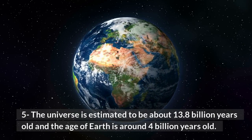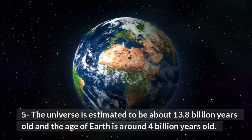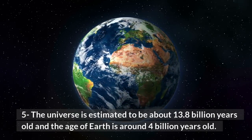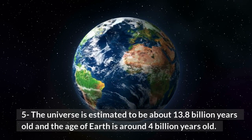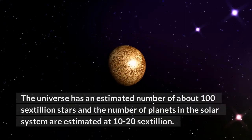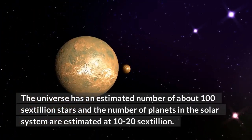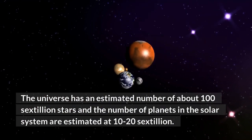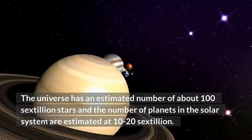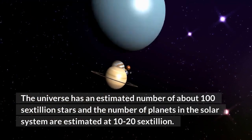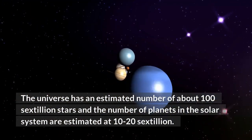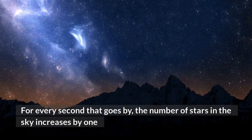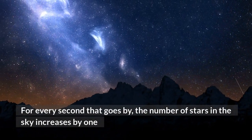The universe is estimated to be about 13.8 billion years old and the age of Earth is around 4 billion years old. The universe has an estimated number of about 100 sextillion stars and the number of planets in the solar system is estimated at 10 to 20 sextillion. For every second that goes by, the number of stars in the sky increases by 1.